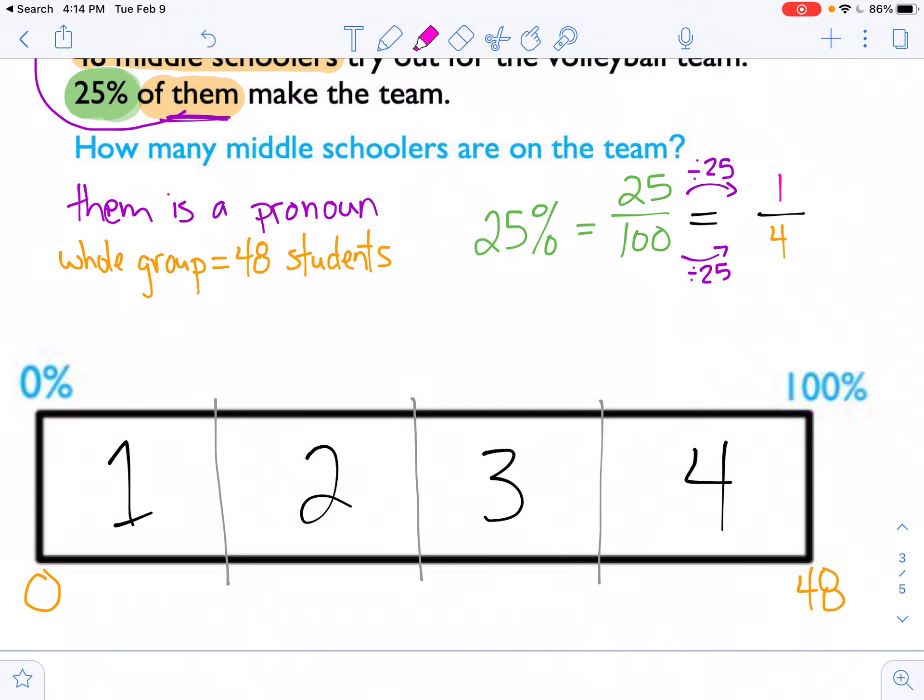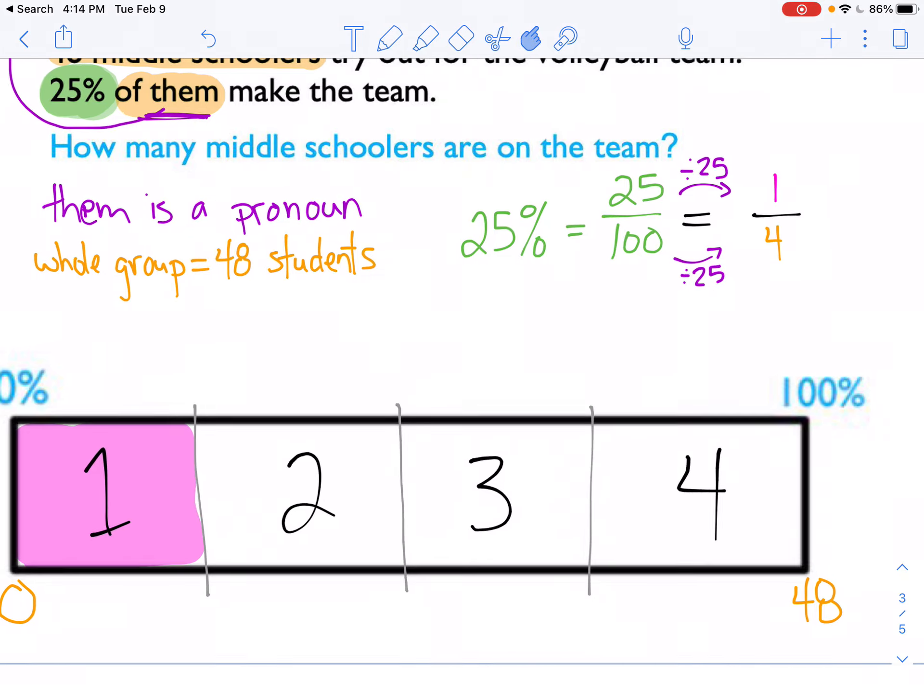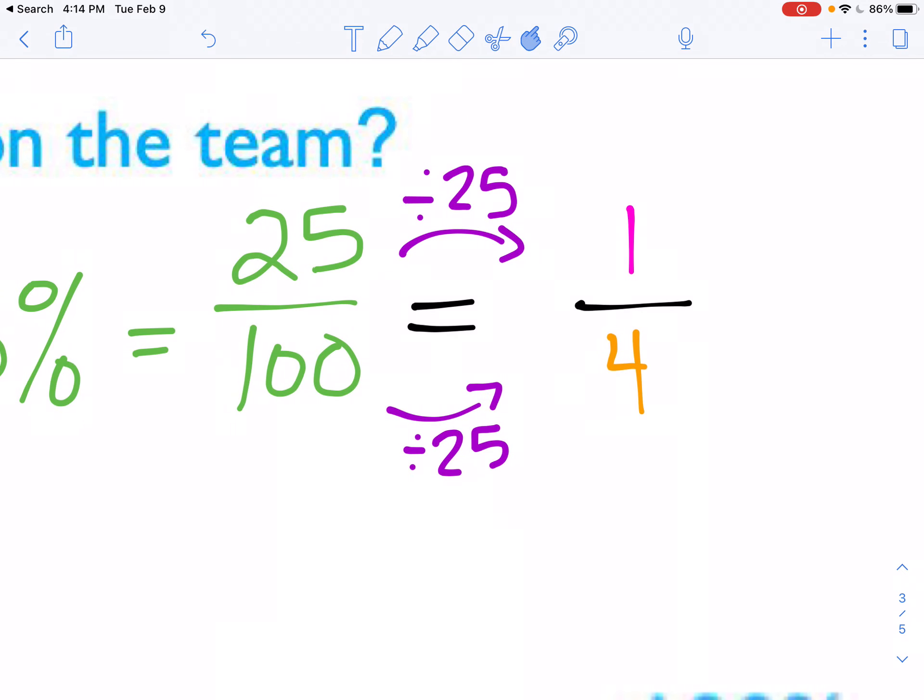The numerator is one. So I'm going to color in one of those parts. All right. And remember, let's try coloring in one more time. That was a little bit icky. There we go. That's a little bit better. Remember, in the work, in simplifying the fractions, I'm going to zoom back in, I divided by 25.